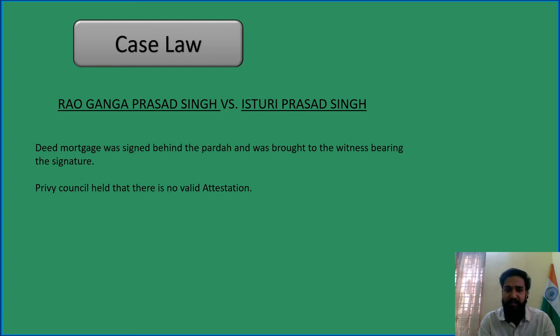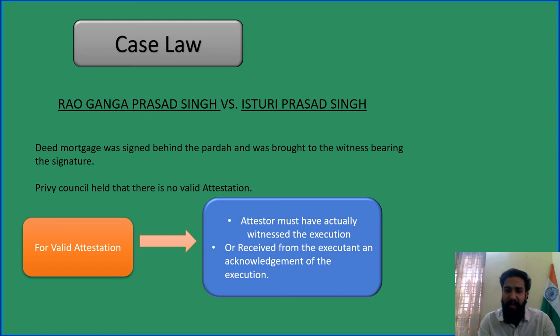The Privy Council held it is not a valid attestation because, while it is not mandatory that the actual owner should be present, one thing is essential: if the actual owner is not present, the acknowledgement of the actual owner should be there. For a valid attestation, the attester must have actually witnessed the execution, or received from the executant an acknowledgement of the execution. If there is an issue for a purdah-wearing Muslim lady to come in front of others, she should have given an acknowledgement that she has executed it. Because of these two reasons, the Privy Council held that it is not a valid attestation.